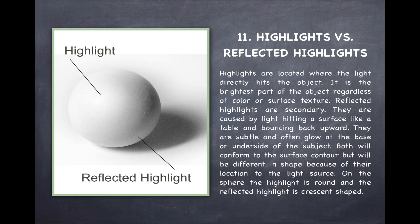Number 11, let's talk about highlights versus reflected highlights. Highlights are located where the light directly hits the object. It is the brightest part of the object regardless of color or surface texture. Reflected highlights are secondary. They are caused by light hitting a surface like a table and bouncing back upward. They are subtle and often glow at the base or underside of the subject. Both will conform to the surface contour but will be different in shape because of their location to the light source. On the sphere the highlight is round and the reflected highlight is a crescent shaped.